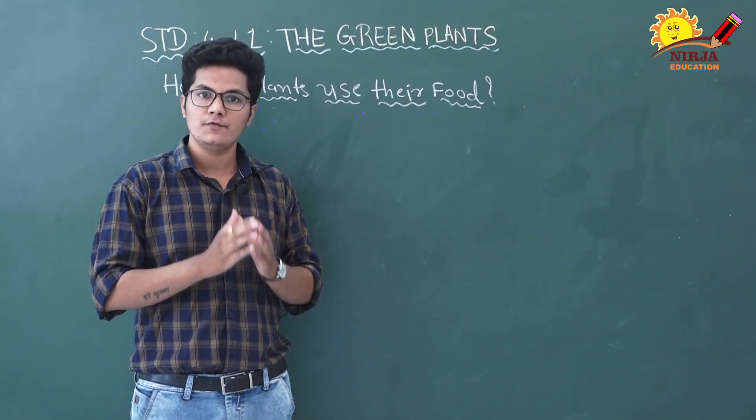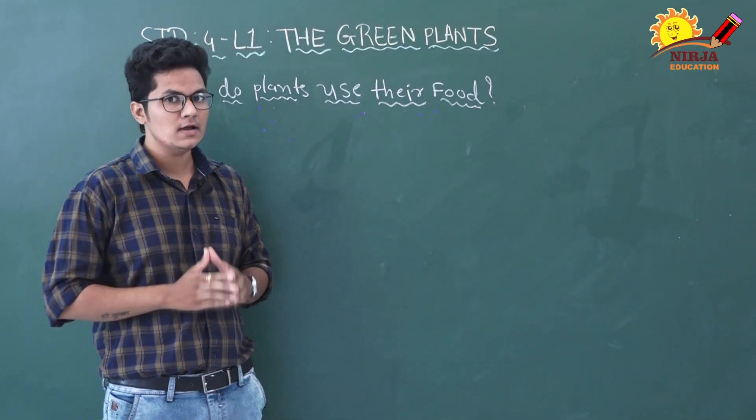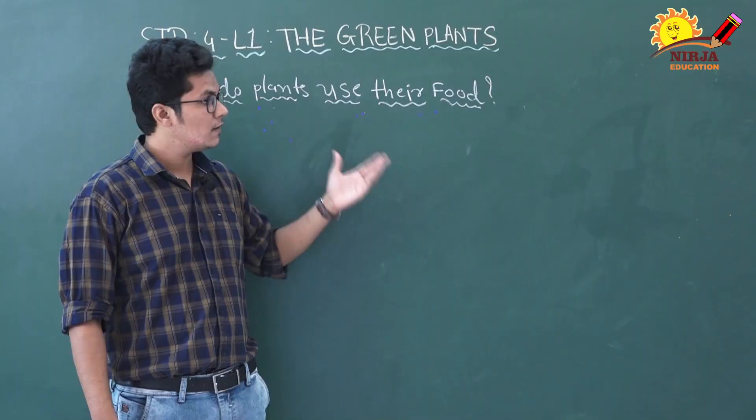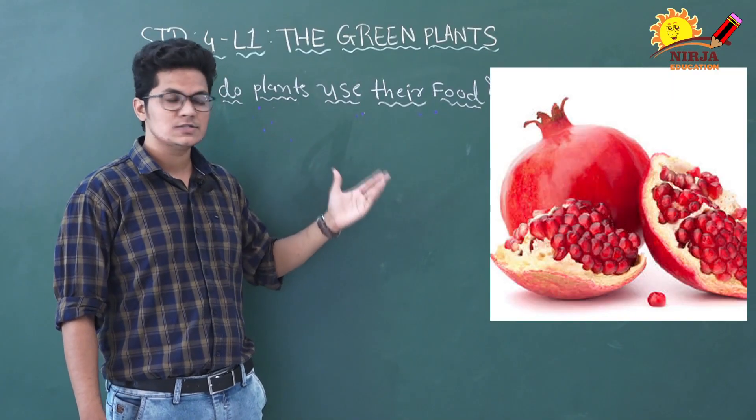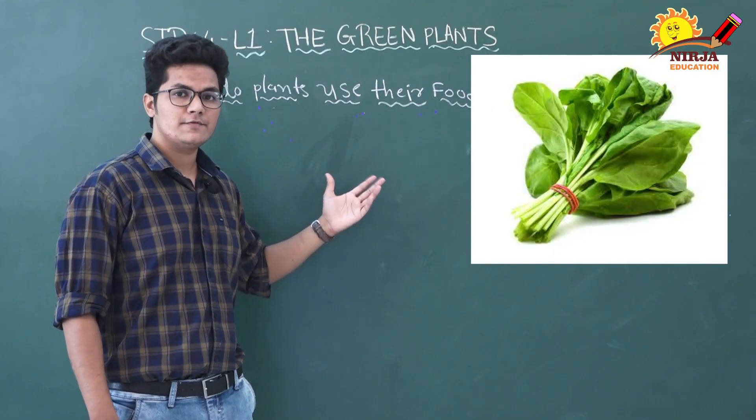You can see in the picture some parts of different plants we use as food - roots, stem, fruit, seeds and leaf.